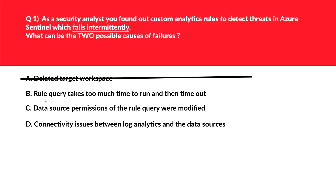Let's now look at option B, that is rule query takes too much time to run and then times out. If a rule or query is taking too long to execute, then this can be a temporary issue, especially when the server workload is too much. When the server load is less, the query will run fast. Since this belongs to the transient failure category, we'll keep this option aside as we need two correct answers.